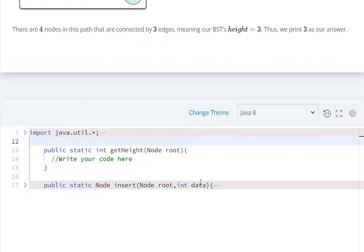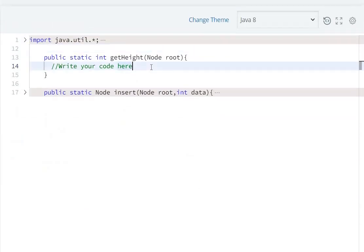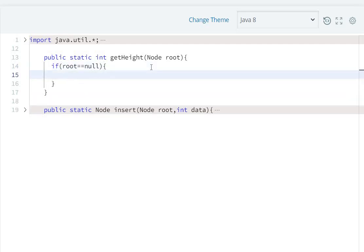So now we will code. First step will be: if root equals null, meaning nothing is left, we will return minus one.